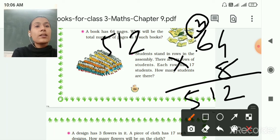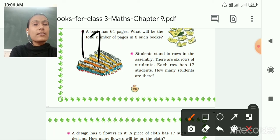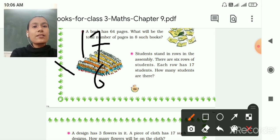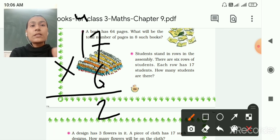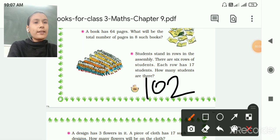Then next, students stand in rows in the assembly. There are 6 rows of students. Each row has 17 students. So 17 multiply by 6. 6 multiply by 7, 6 7's are 42, 2 here 4 carry. 6 1 is 6 plus 4, 6 plus 4 is equal to 10. So 102 students are there in 6 rows.